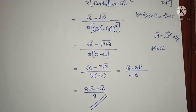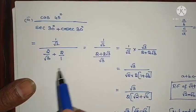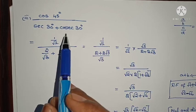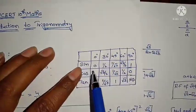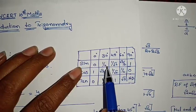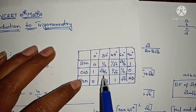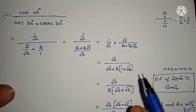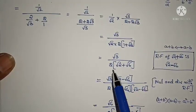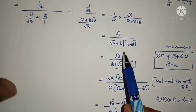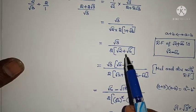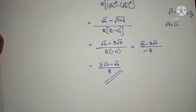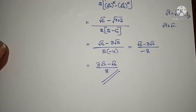That's all — this is our answer. See once again what I have done: secant is reciprocal of cos, cosecant is reciprocal of sine. Sin 30 is 1/2 so cosec 30 is 2; cos 30 is √3/2 so sec 30 is 2/√3. Then I took 2 as common, multiplied by √2, applied the rationalizing factor, and solved. Very simple!